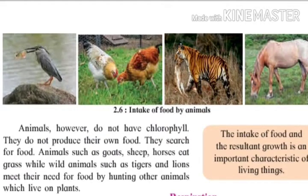Animals, however, do not have chlorophyll. They do not produce their own food. Pranyan madhe chlorophyll naste, manjez hari dhravya naste, aani prani stache anna tayar karat nahit. They search for food. Animals such as goats, sheep, horses eat grass, while wild animals such as tigers and lions meet their need for food by hunting other animals which live on plants.